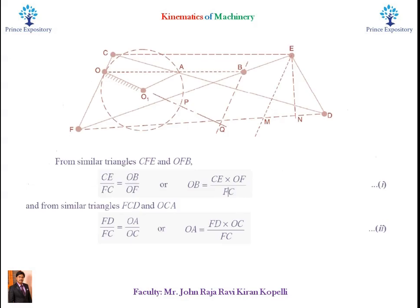To prove O-B into O-A is constant, let us look at the figure once again. From the similar triangles C-F-E and O-F-B, we can write C-E by F-C is equal to O-B by O-F. If we write in terms of O-B, it will give C-E into O-F as numerator and F-C as denominator.